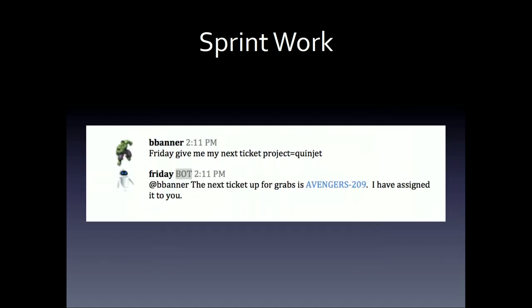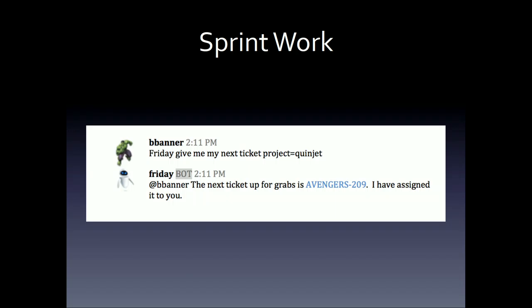You might have some sprint work. Let's say that you are one of those idealistic agile organizations where everybody is cross-trained and everybody can do every single thing. If you live in that dream, go ahead and have your bot just hand out the next work — dole it out. You can also keep abreast of news and information. RSS feeds can pipe into your chat room, everybody can see what's going on, they can have some conversations about it. It's a great way to keep everybody informed.